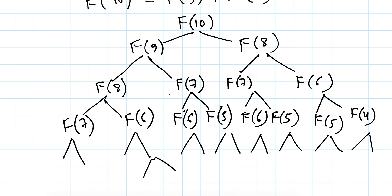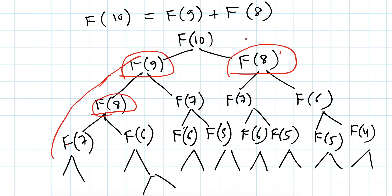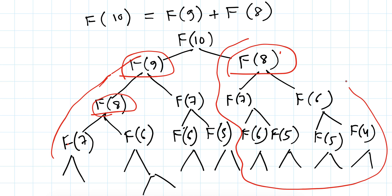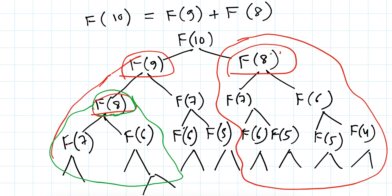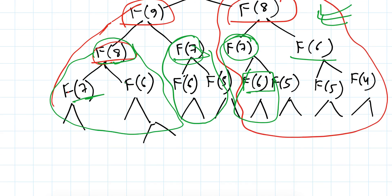The tree will expand further. You can see that the first time we calculate F(9) we need its entire subtree including F(8). But then for F(8) as a direct child of F(10), we calculate that entire subtree again — whereas we already computed it while calculating F(9). So there is no point in calculating it again. Similarly, F(7) appears here, here, and here; F(6) appears at multiple places. These values F(6) and F(7) will be calculated at multiple places, which really slows down the solution if we just write a recursive function.